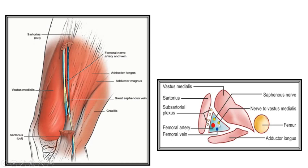There are also a few branches of the obturator nerve. The saphenous nerve and the nerve to the vastus medialis contribute to the innervation of the anteromedial knee joint and are important targets for the adductor canal block. It is the nerve to the vastus medialis — the muscular branch — that can be stimulated by PNS, and the motor response of contraction of the vastus medialis muscle forms the basis of the PNS guided adductor canal block.